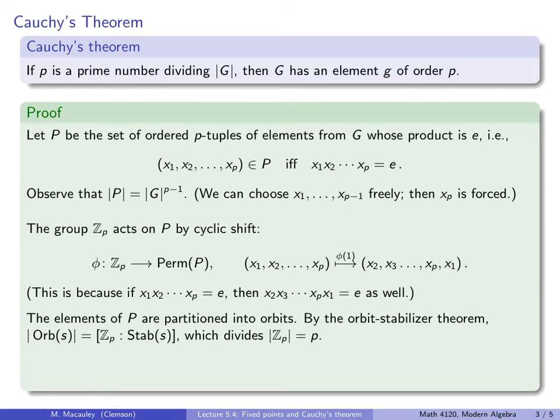Let's look at the orbit structure of this action. So the elements of our set P are partitioned into orbits, of course. And by the orbit stabilizer theorem, the size of some orbit, say the orbit containing s, is the order of the group divided by the order of the stabilizer, in other words, just the index of the stabilizer in the group, and that divides the order of the group, which is prime. Therefore, the size of any orbit has to be either 1 or p.